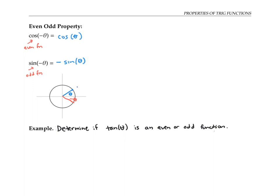The coordinates of the point at angle theta, by definition, are cosine theta and sine theta, whereas the coordinates of the point at angle negative theta are cosine of negative theta and sine of negative theta. By symmetry, these two points have the exact same x-coordinate, and therefore cosine of theta must equal cosine of negative theta. While their y-coordinates have the same magnitude but opposite signs — one positive and one negative — therefore sine of negative theta is the negative of sine of theta.